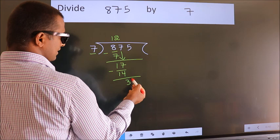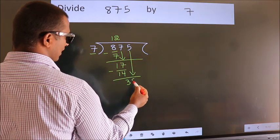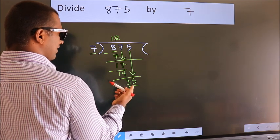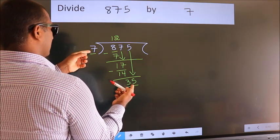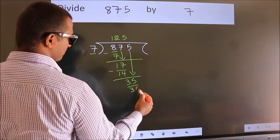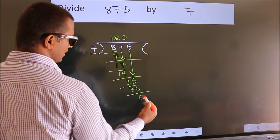After this, bring down the beside number. So 5 down, so 35. When do we get 35 in the 7 table? 7 fives 35. Now we subtract. We get 0.